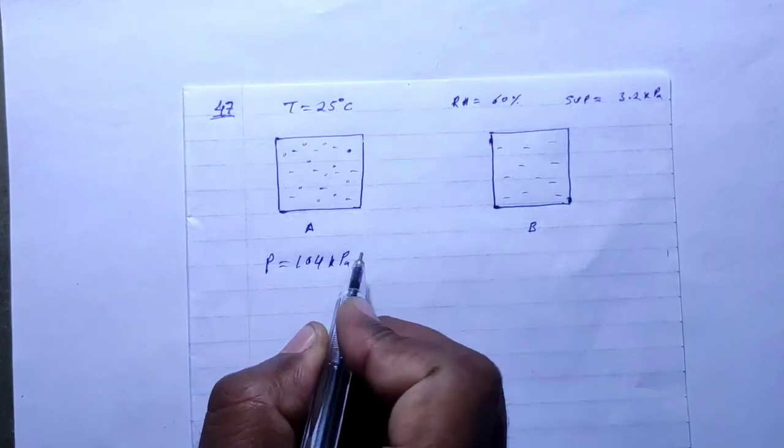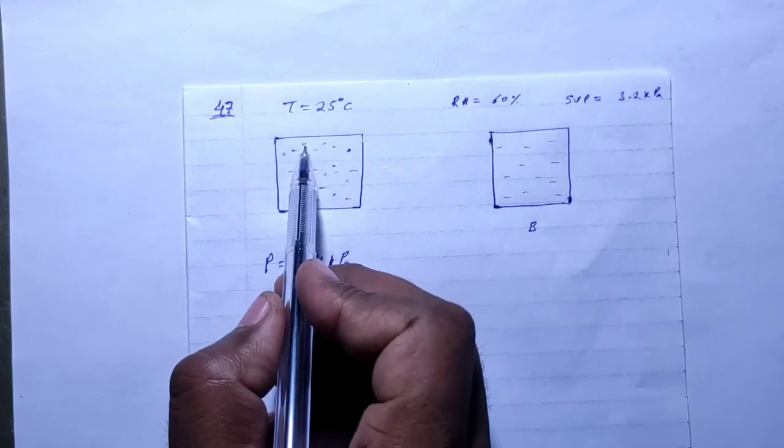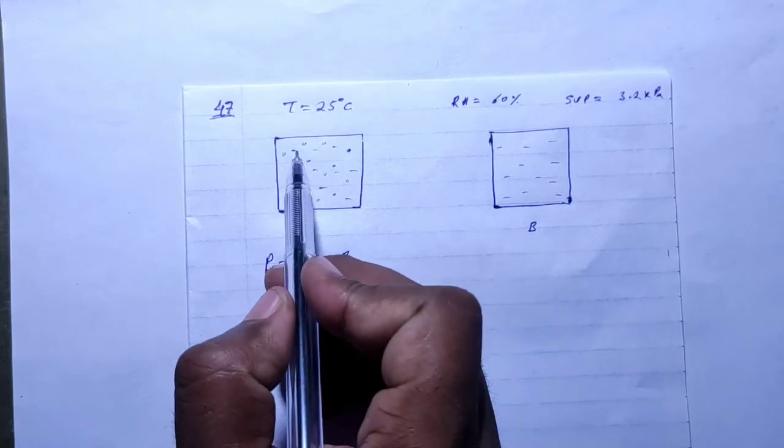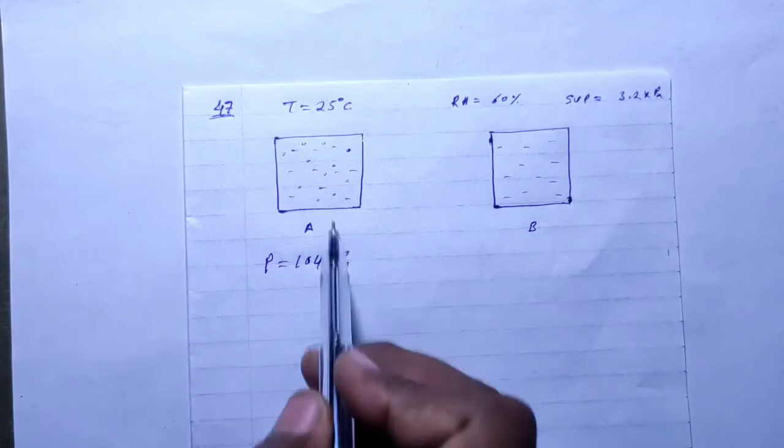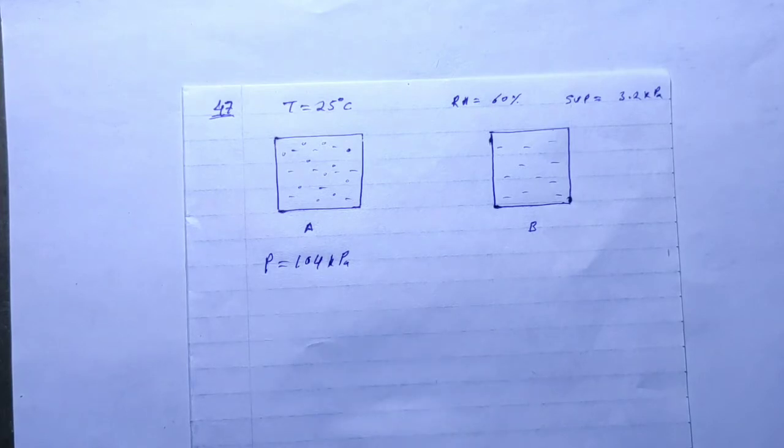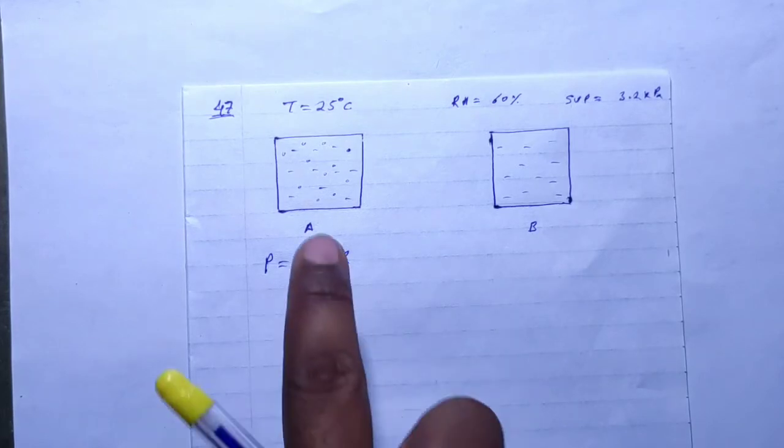The total pressure is 104 kPa, which includes both water vapor and air. What is the room's vapor content?